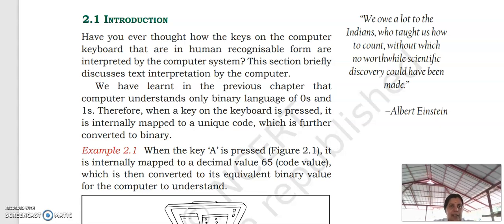Text interpretation means how the text is converted into computer-recognizable form. We are entering some text like who, how, what — and how this text is converted into computer-recognizable form. This is what our Encoding Schemes chapter is mainly focused on.